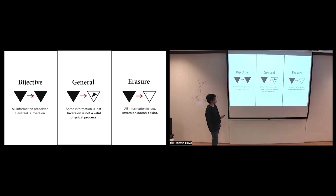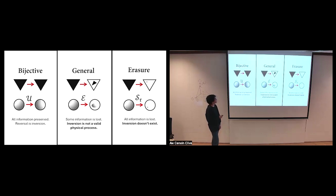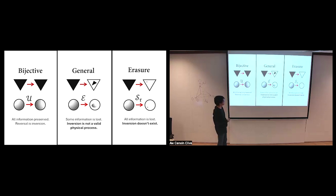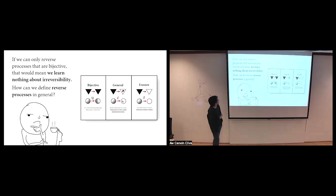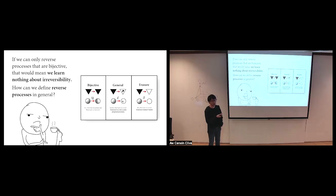Inversion is not a valid physical process in general. There are situations like erasure - which is a physically valid process where you just throw out a state and return some fixed state - where inversion doesn't exist. The same holds for quantum channels: bijective corresponds to unitary, general corresponds to CPTP maps, and erasure works the same way with quantum states. If we can only reverse bijective processes, that's uninspiring - we don't learn anything about irreversibility. So can we define reverse processes in general?